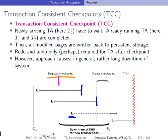After the running transactions have finished, we have time to create our checkpoint. After the checkpoint creation, transaction three can start. There is also another transaction T4 that started after the checkpoint creation, and this one is still running when the crash happened.